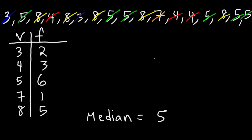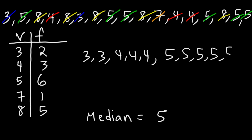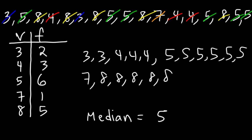Now if that confuses you, what you could do is write these numbers in ascending order. So we have 2 threes, 3 fours, 6 fives, 1 seven, and 5 eights. Let's cross out the first 5 numbers on the left and the first 5 numbers on the right. Next, let's cross out the next 2 numbers on the left and the next 2 numbers on the right. Repeating this pattern, we can see that the middle number is 5. So that's the median.